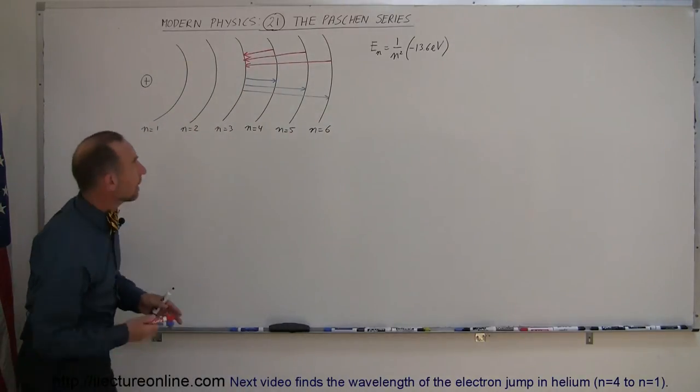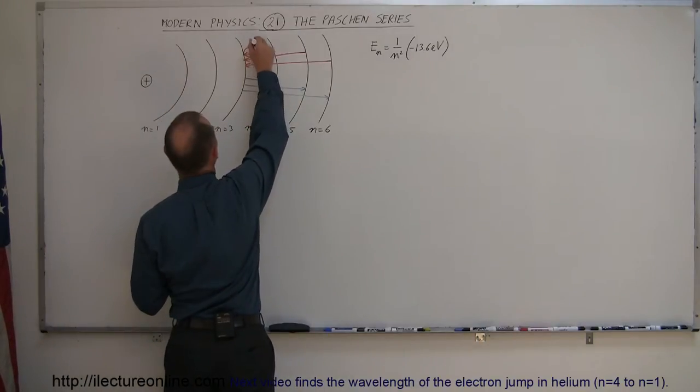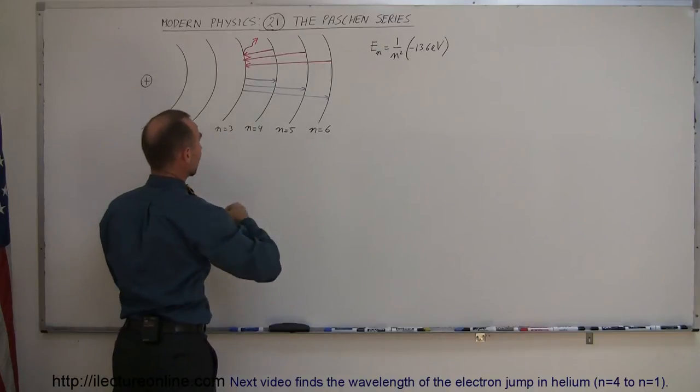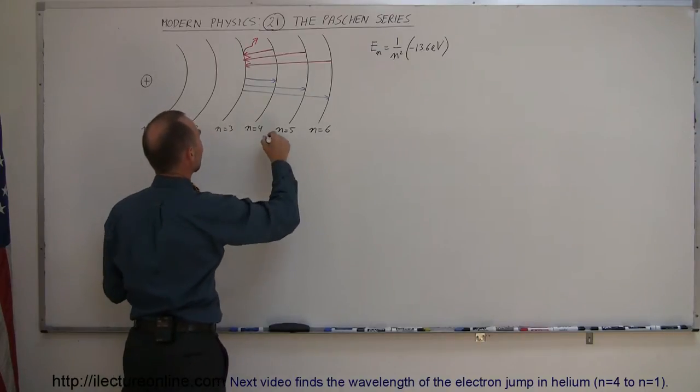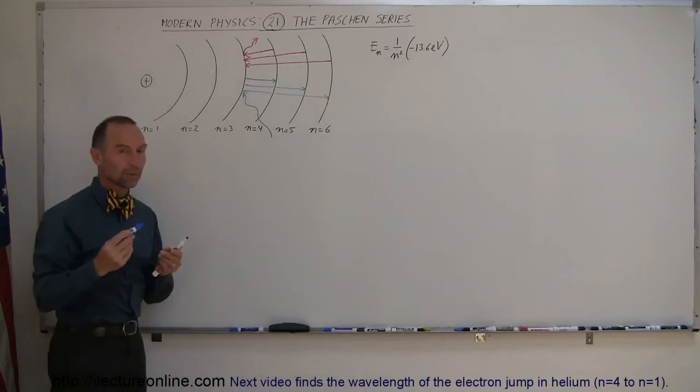Again, if the electrons jump down to the lower energy level, a photon is emitted. And if electrons jump to higher energy levels, it's because the photon is being absorbed coming from the outside.